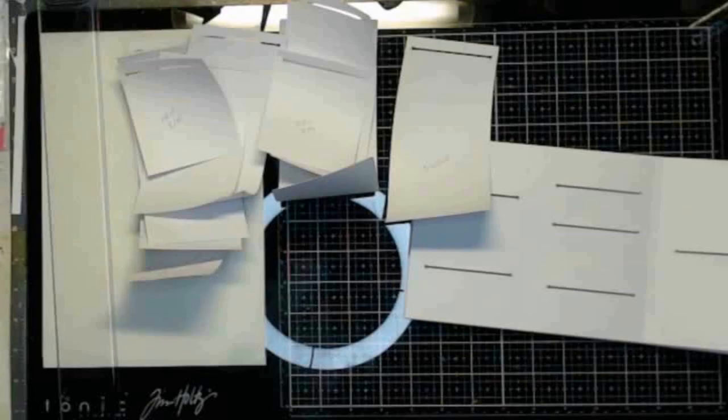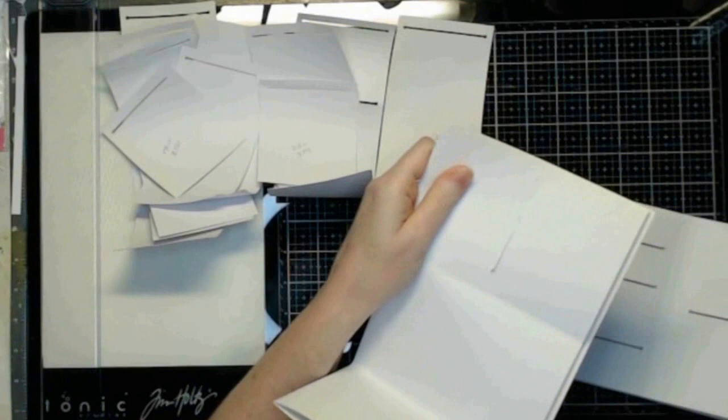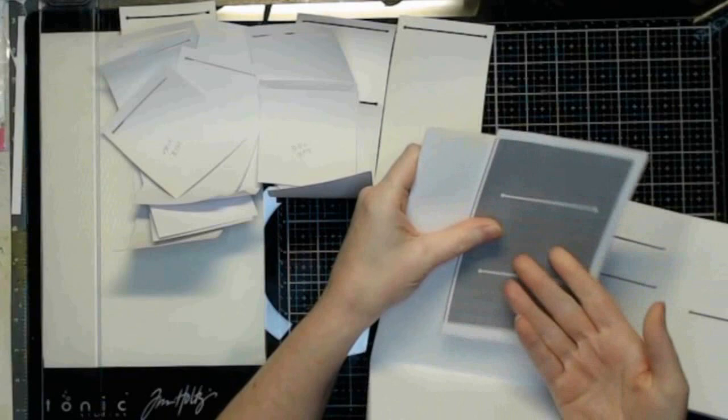I do have the measurements up on the blog. They're labeled so the slots line up and the pockets fit. So if you don't have an electronic cutting machine and you're going to be cutting these out by hand, they're all the same width. I think I have them at three and a quarter inches.